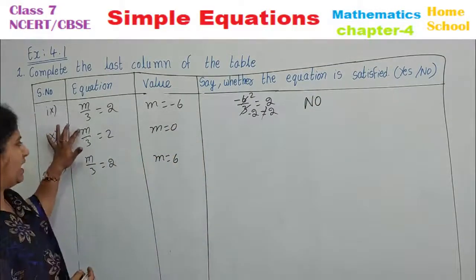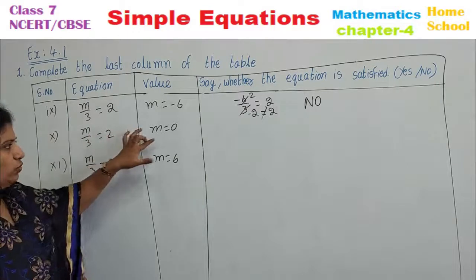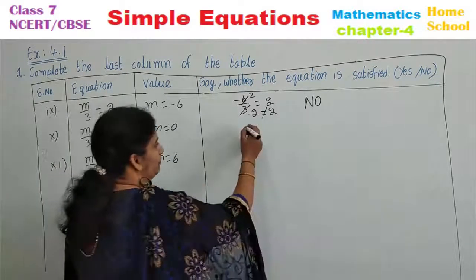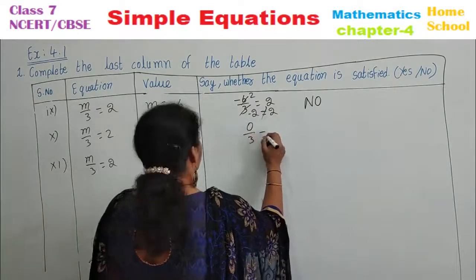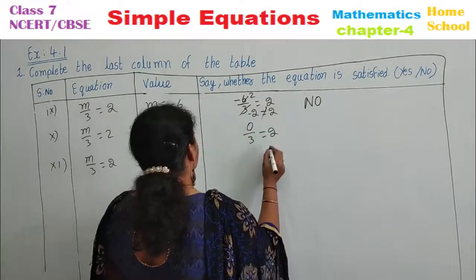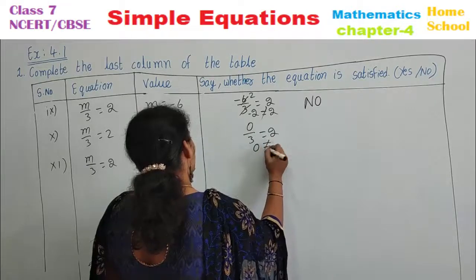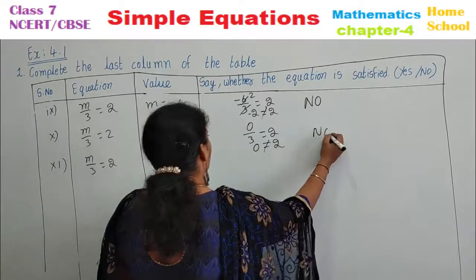Next: m divided by 3 equals 2, where m equals 0. Substitute: 0 divided by 3 equals 0, and 0 is not equal to 2. Write no.